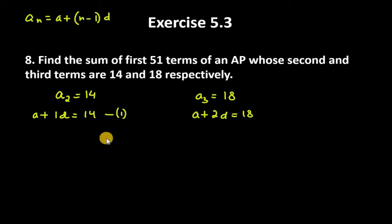Now we can simplify this and find the value of A and D using the elimination method. I'll be using equation 1 and equation 2. So A plus D equals 14, A plus 2D equals 18. Subtract them.